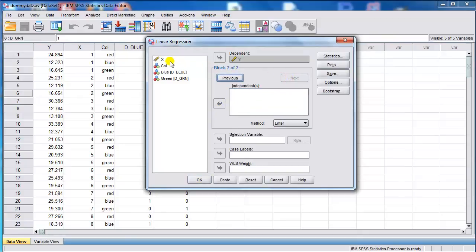Instead of clicking on OK, we click on Next to fit the full model. And the full model is X including the dummies blue and green for the color. I can toggle back and forth between the two models, so we call this block 2. I can go back to model 1, which is called block 1. And when I'm done, I click OK.